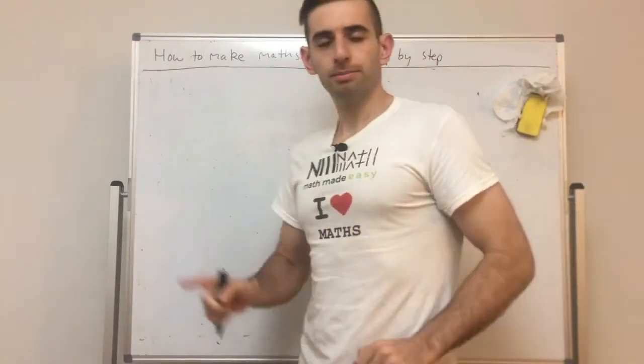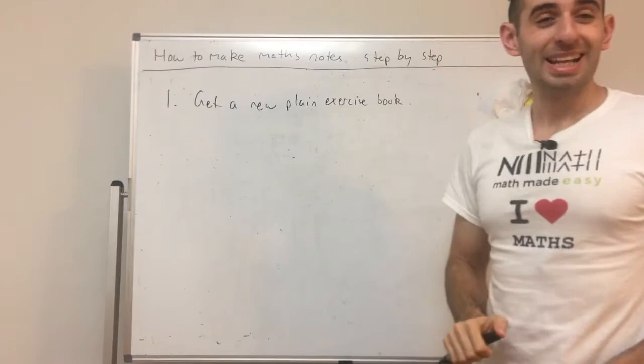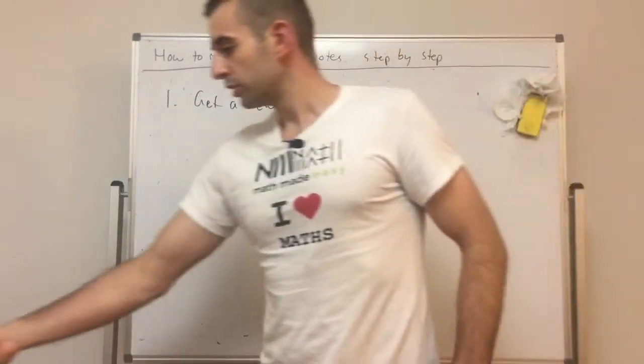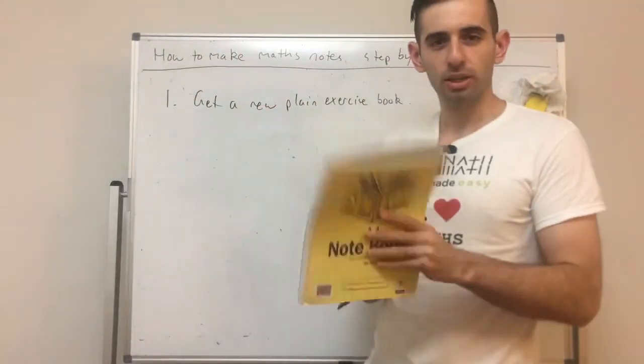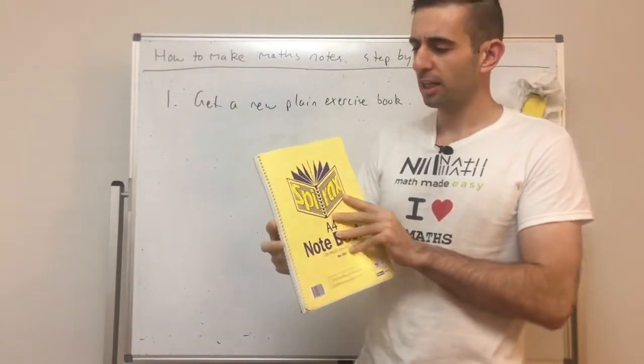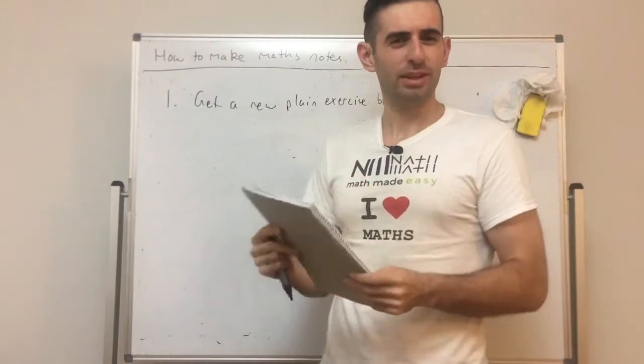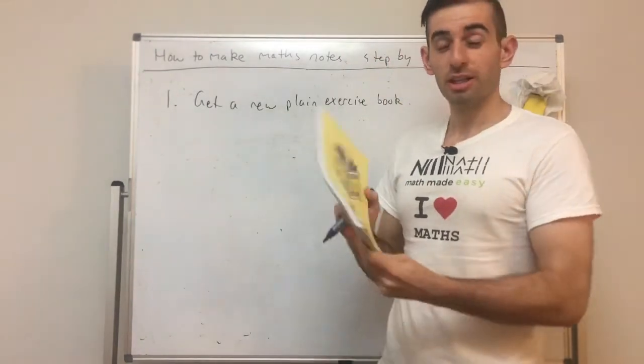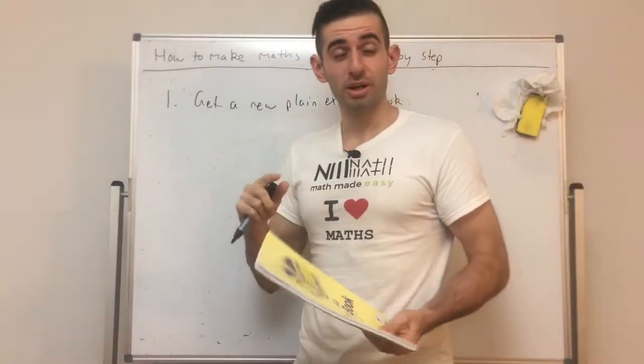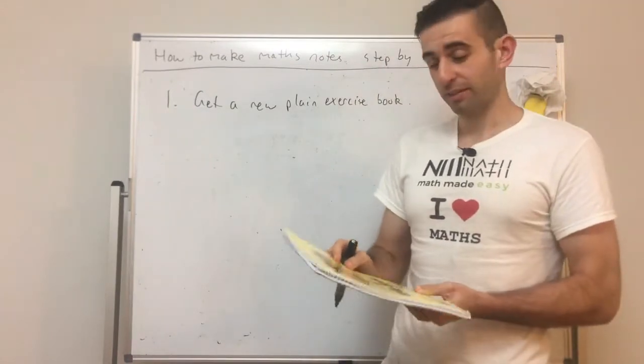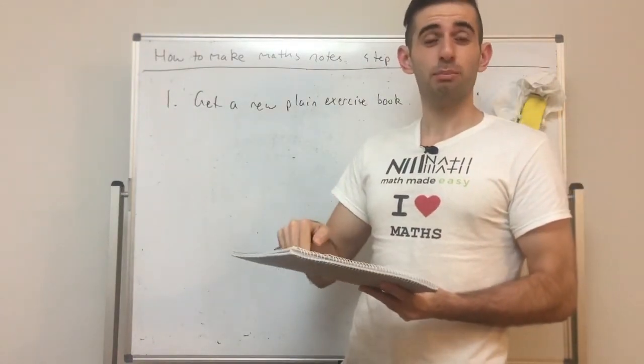First, get a new plain exercise book. I prefer these spiral notes because you can just fold them in like that. You want a brand new one for maths - you're not going to put every subject in one book, only maths in one book.